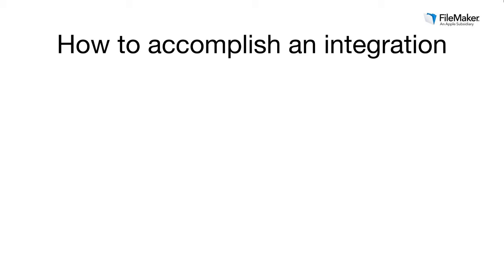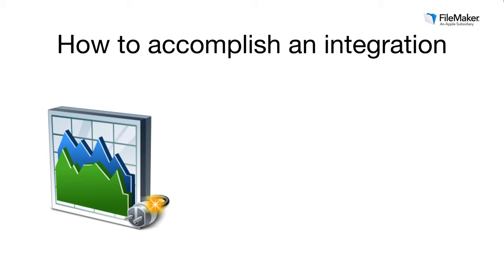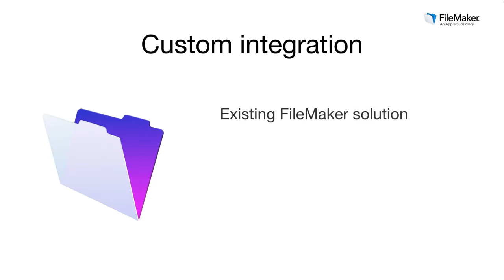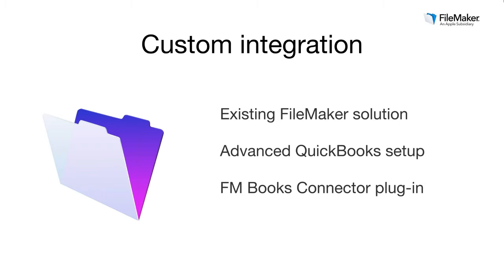Let's talk about how we accomplish an integration. Our FM Books Connector is a plugin used in multiple methods for posting data to QuickBooks — it's a conduit for data exchange. There are three methods: you or your own developer can develop a custom integration using the plugin, you can purchase an integration package such as 123 Sync, or you can use a starter solution like our Core 5, which is built with the ability to push customers and invoices to QuickBooks. A custom integration is ideal if you already have a FileMaker solution you want to connect to QuickBooks, or if you have an advanced QuickBooks setup or robust accounting practices.